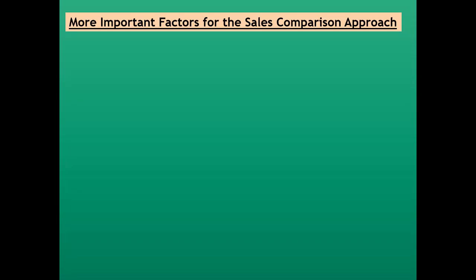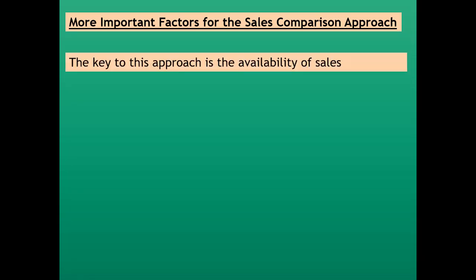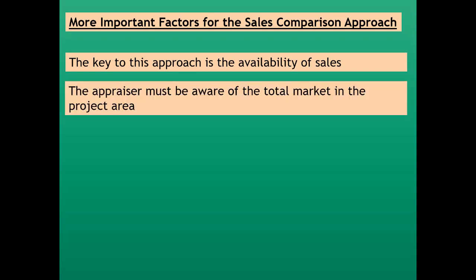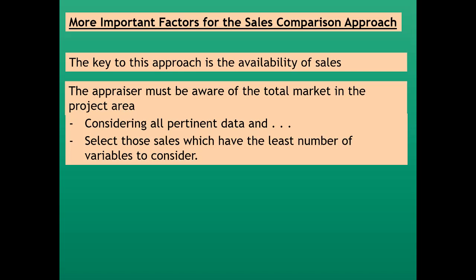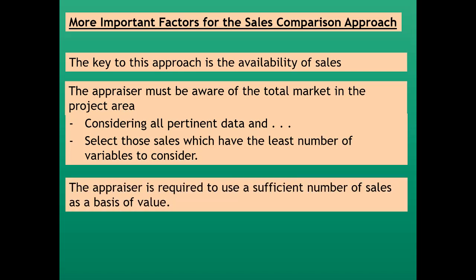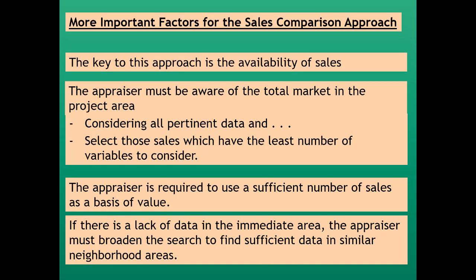More important factors for the sales comparison approach: the key to this approach is the availability of sales. The appraiser must be aware of the total market in the project area and consider all pertinent data, and select those sales which have the least number of variables to consider. If there is a lack of data in the immediate area, the appraiser must broaden the search to find sufficient data in similar neighborhood areas.